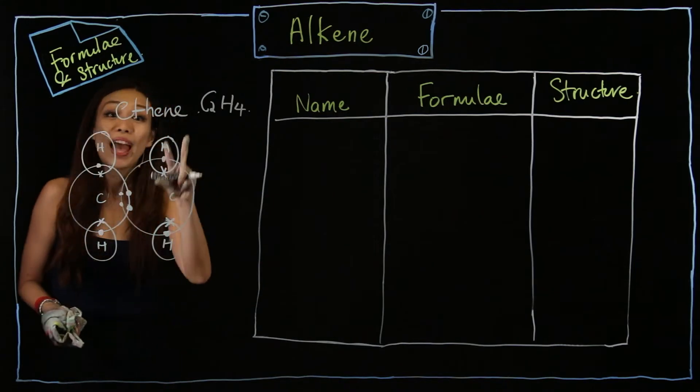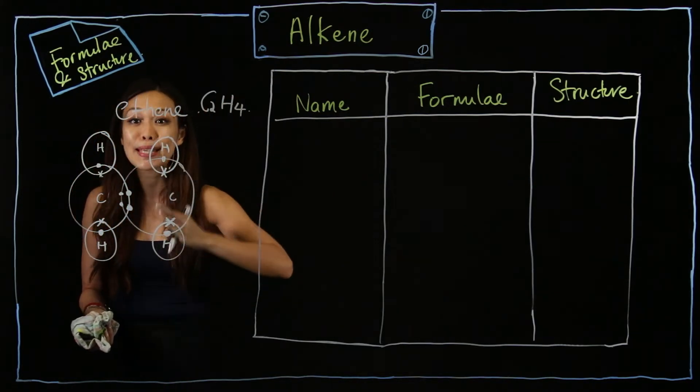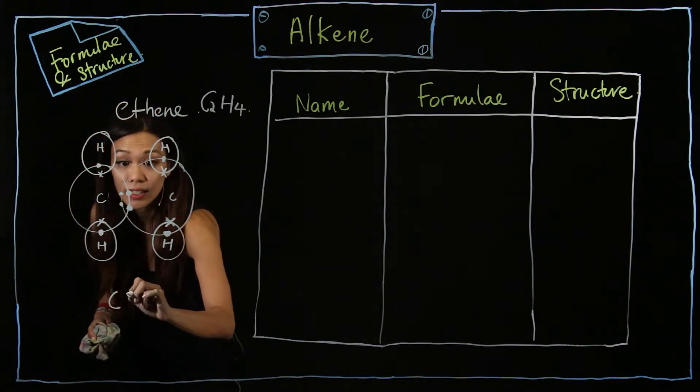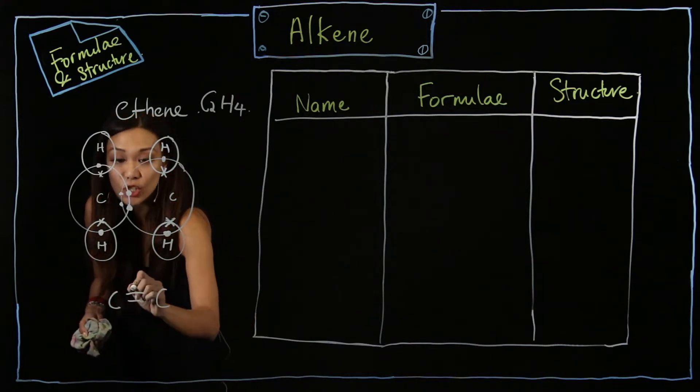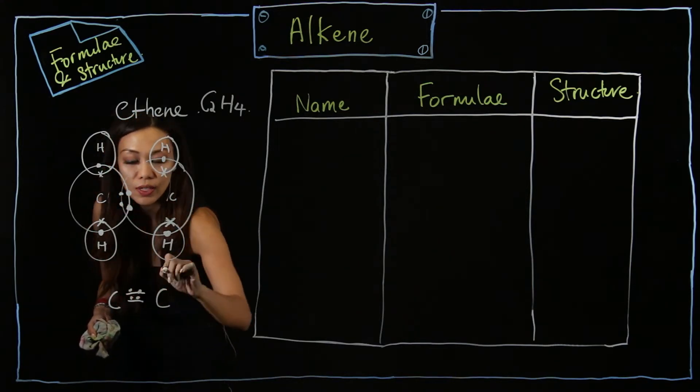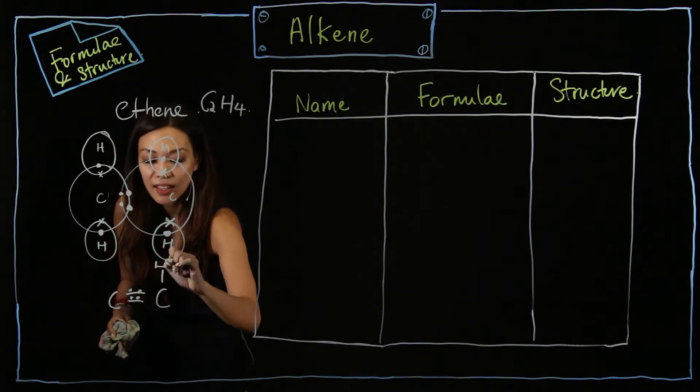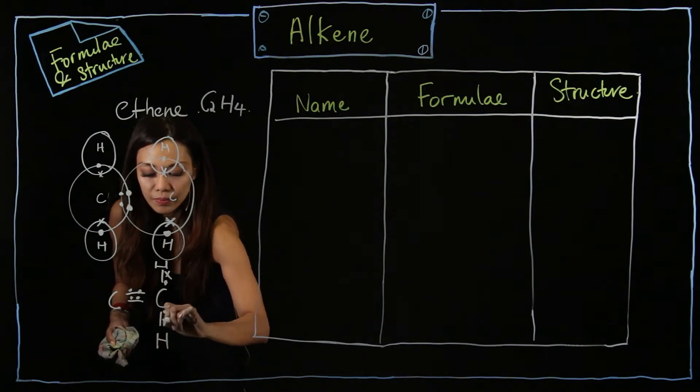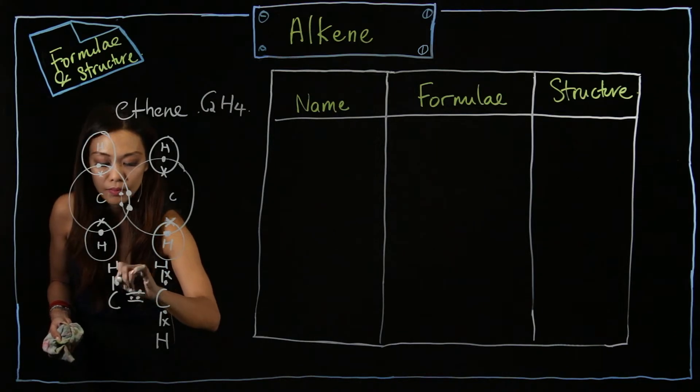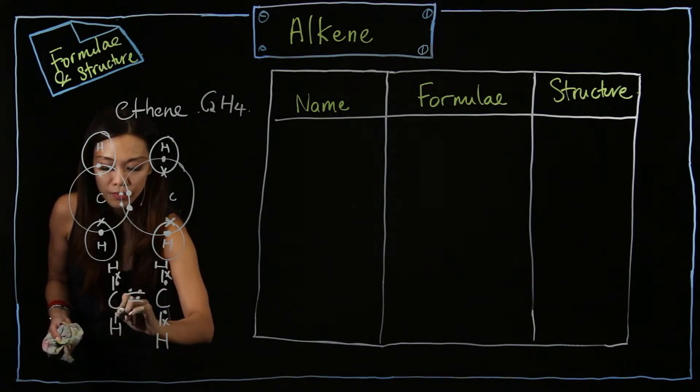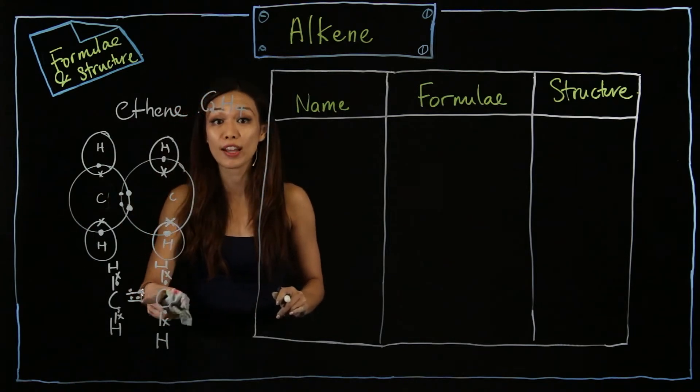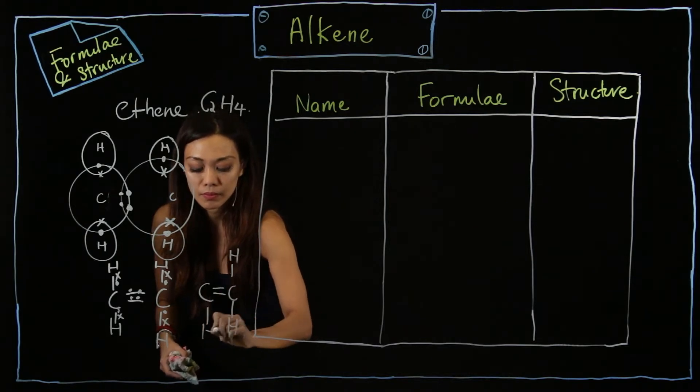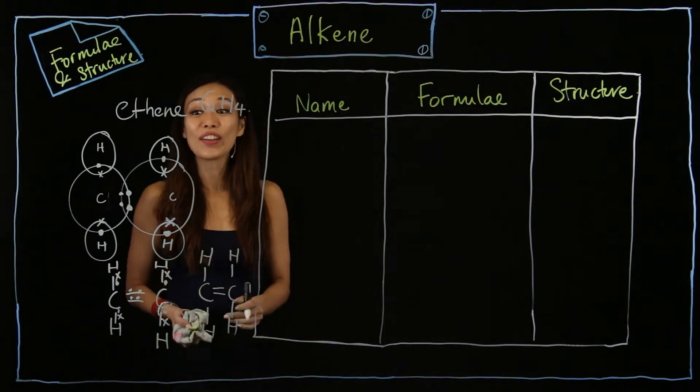As you can see over here, I also mentioned that they will be represented by lines. So it will look something like this - two lines because each of them share a pair of electrons. Can you all see? But of course, you don't show the electrons when you draw it, so it will look something like this. This is your ethene.